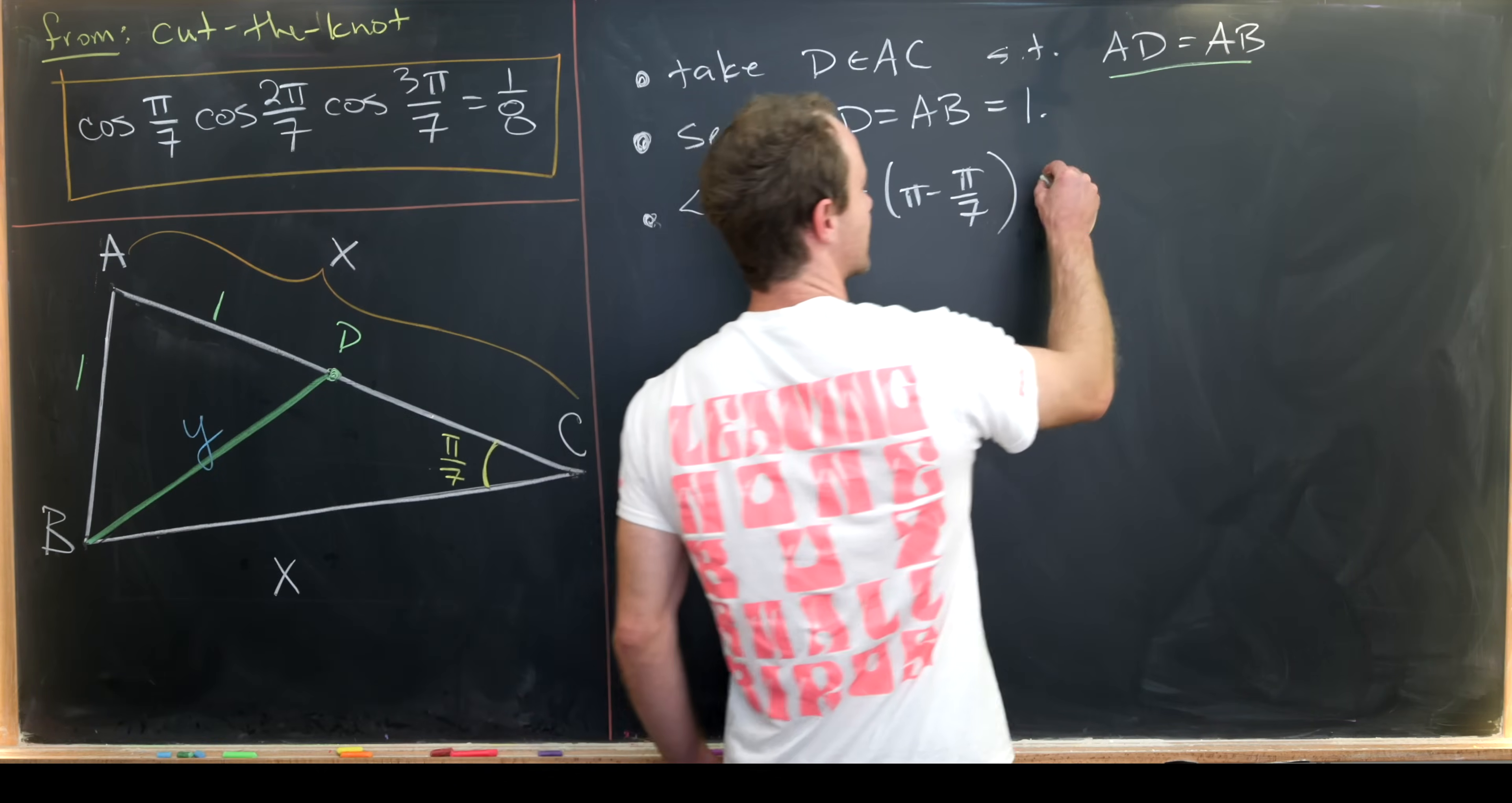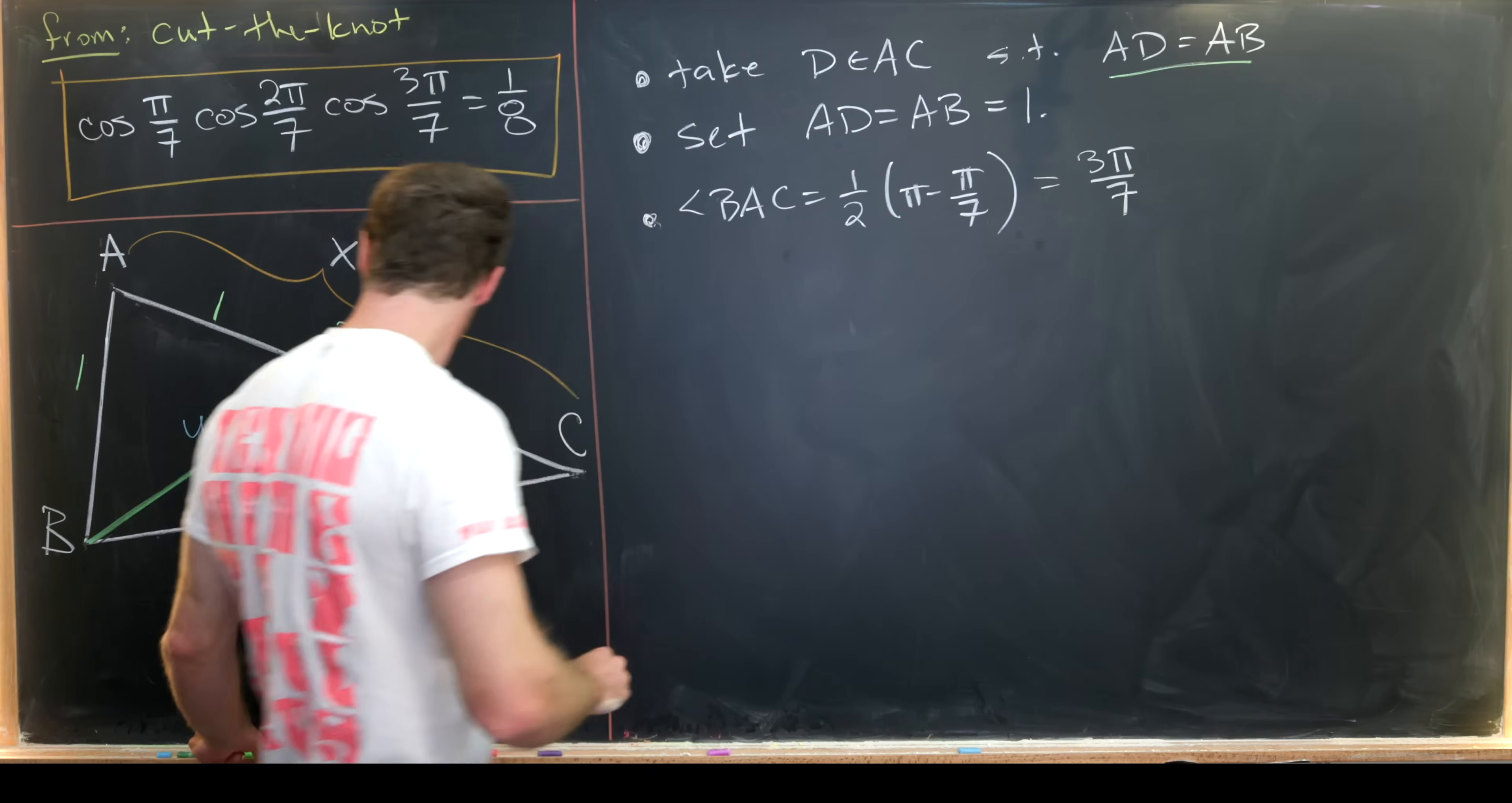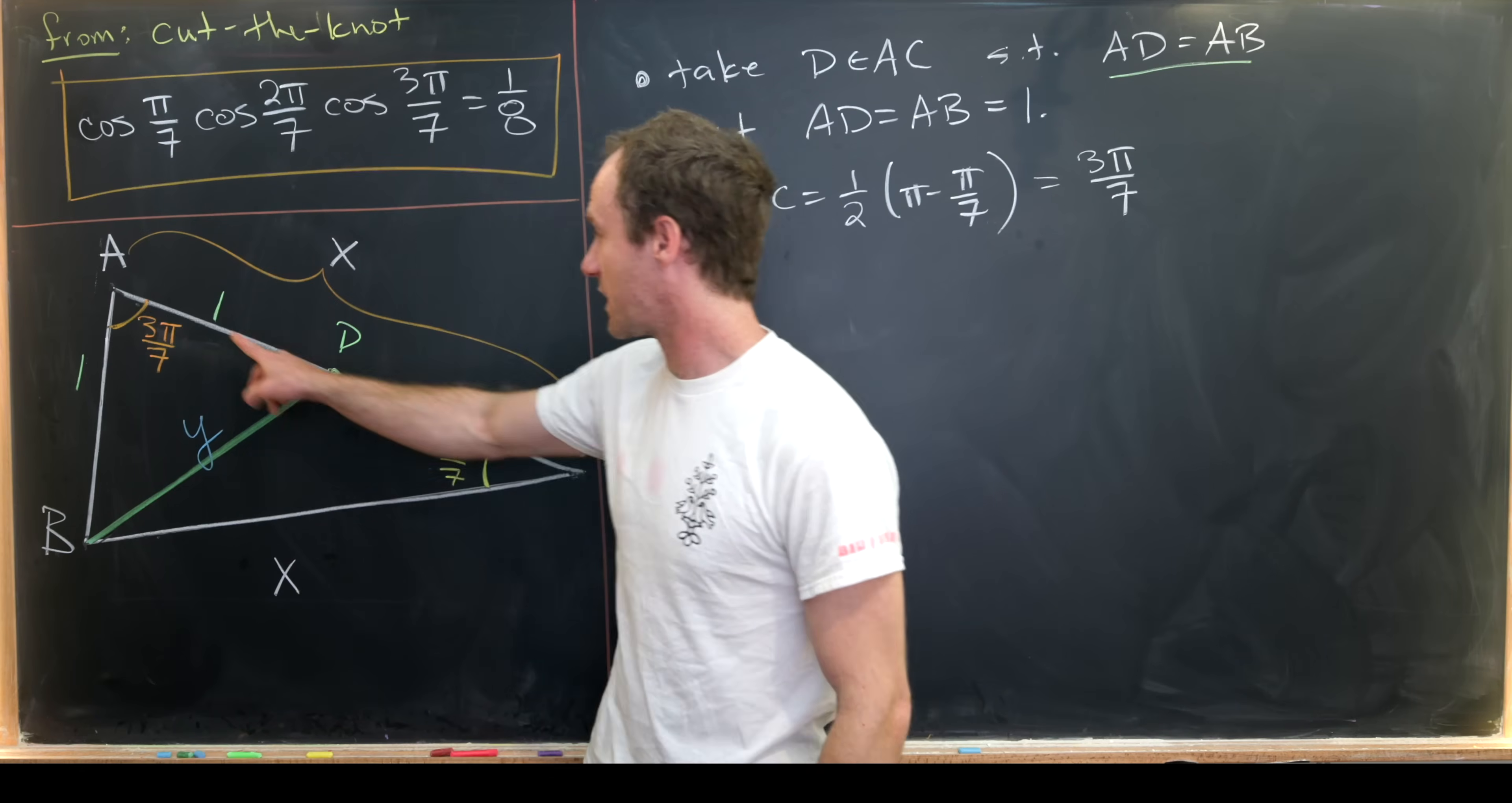But it's pretty easy to do the arithmetic and we'll get that this is 3 pi over 7. Okay so let's put that 3 pi over 7 into our picture. So here we have this angle measure 3 pi over 7. And then next we can play the same game for these two angle measures right here. So ADB and ABD.